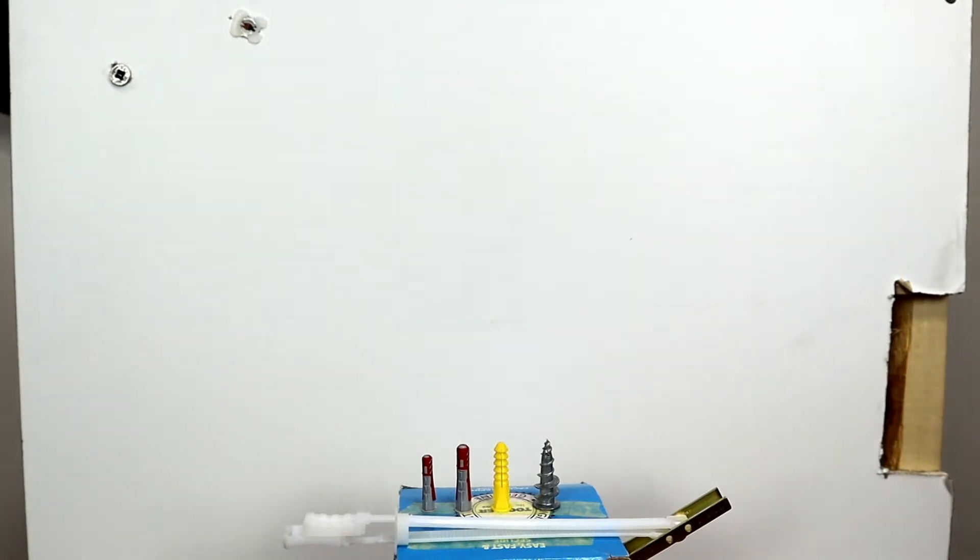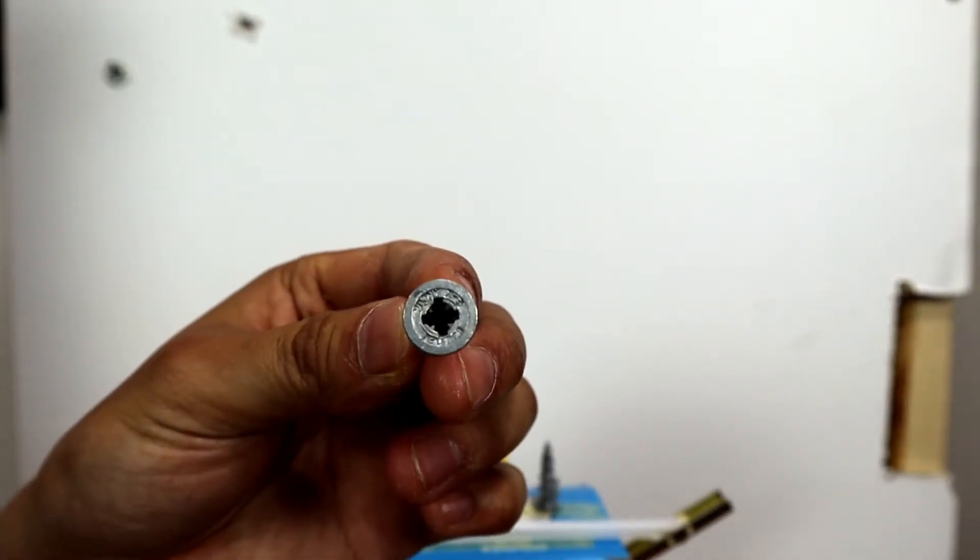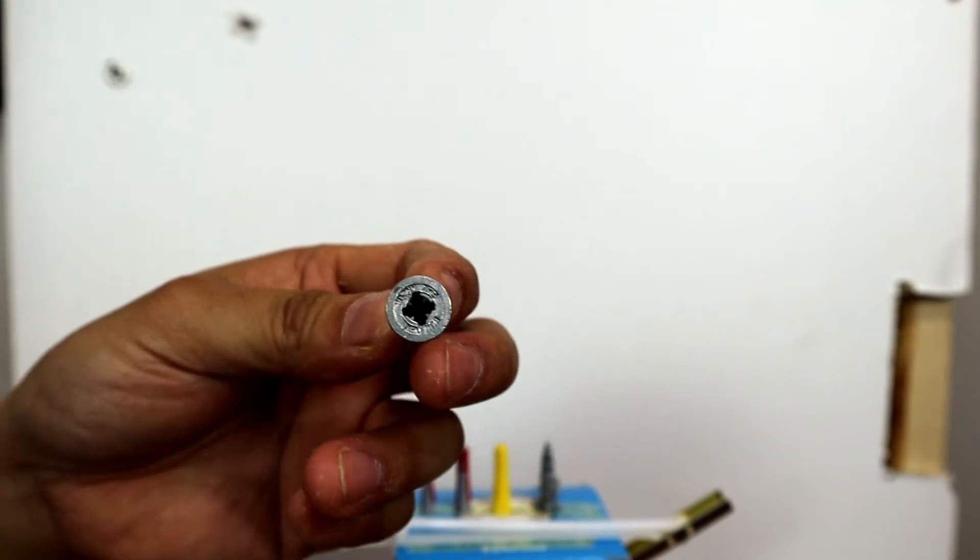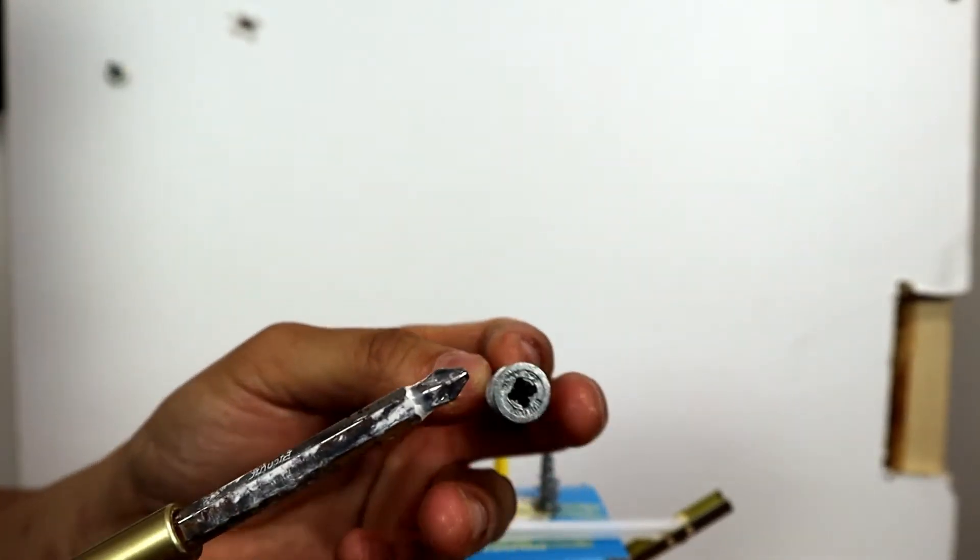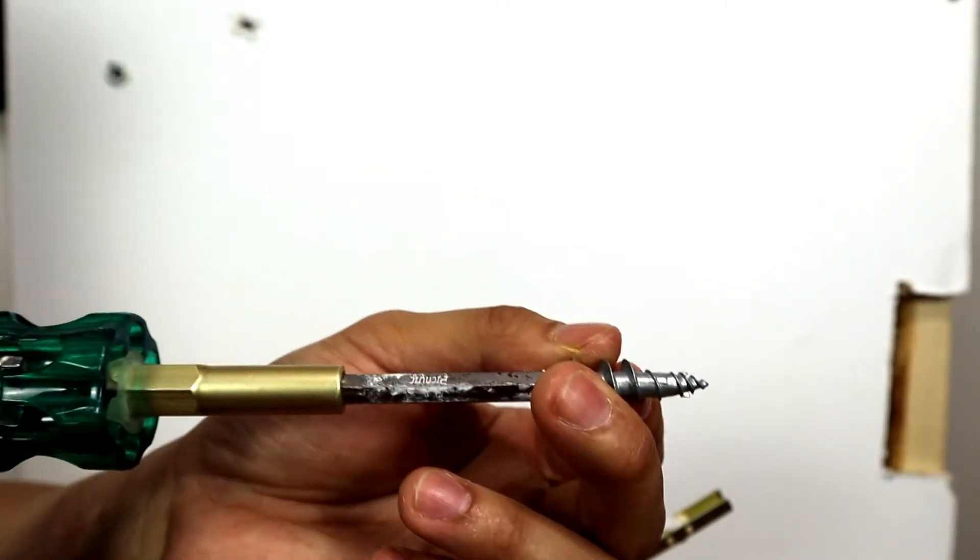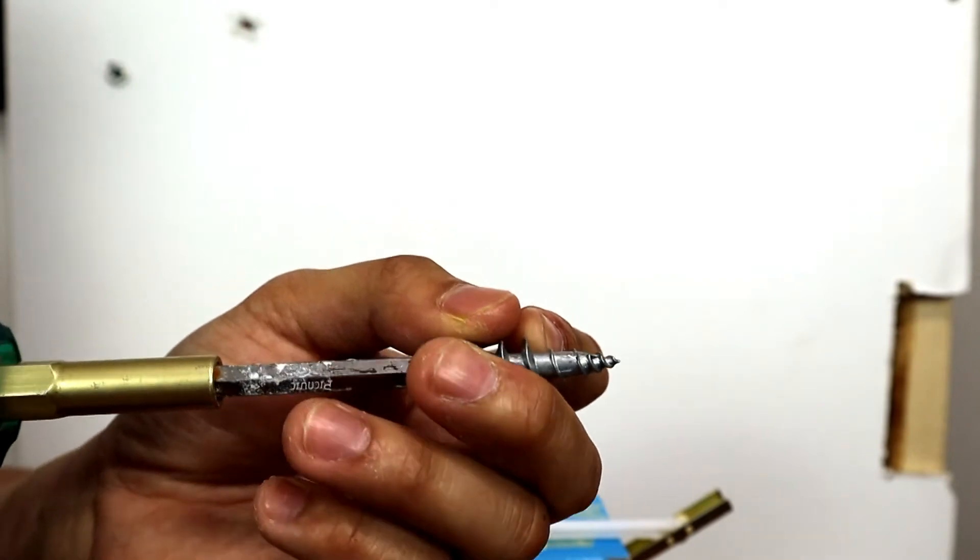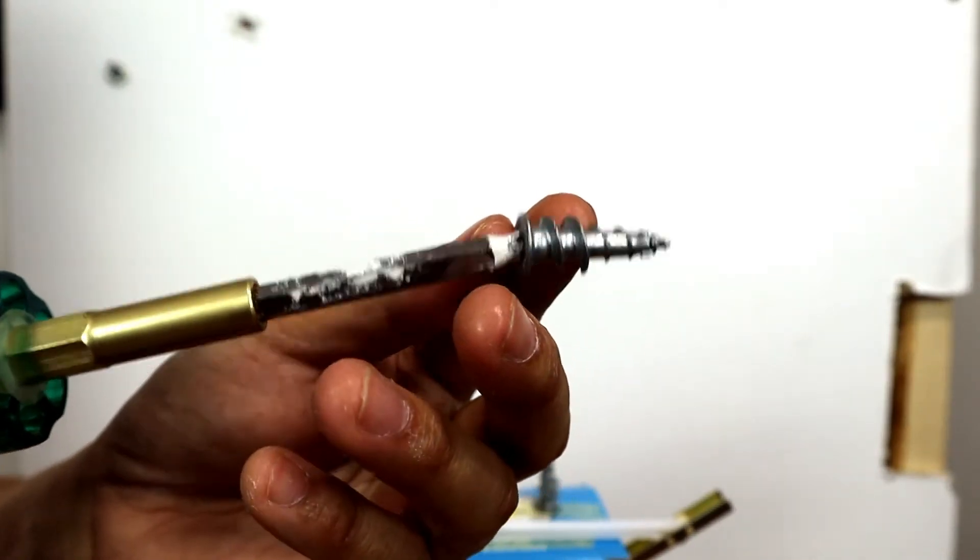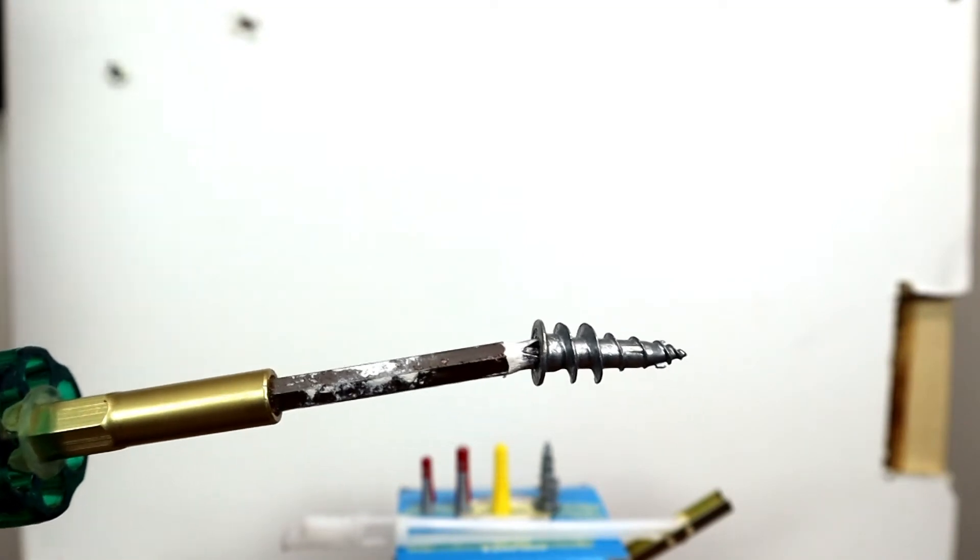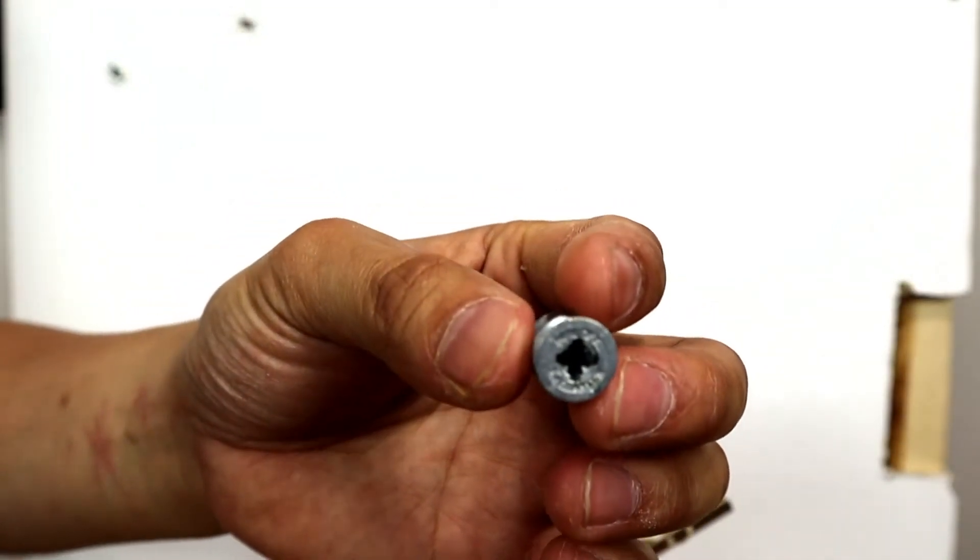Next one here is called EZ Anchor. Closer look, it has a phillips head insert or star head insert. What you do: grab a phillips screwdriver, insert it like this tight against the wall, hold it with your fingers, start it with three or four turns, then you can remove your fingers and finish the rest of the job. Good up to 50 pounds.